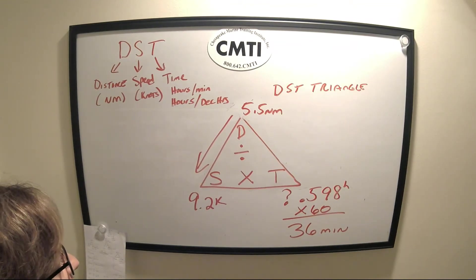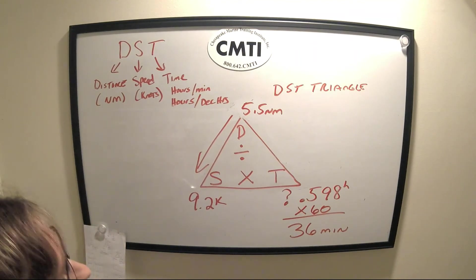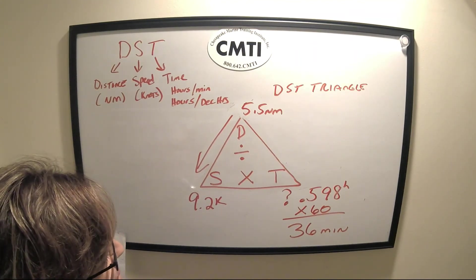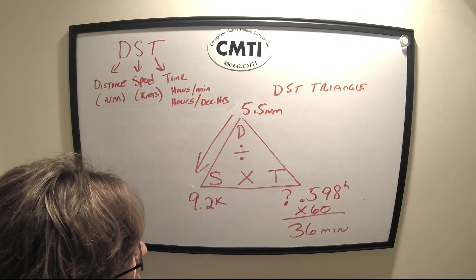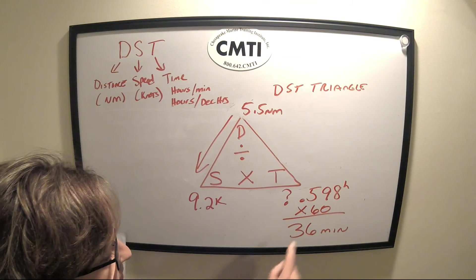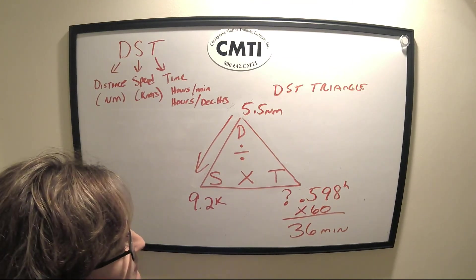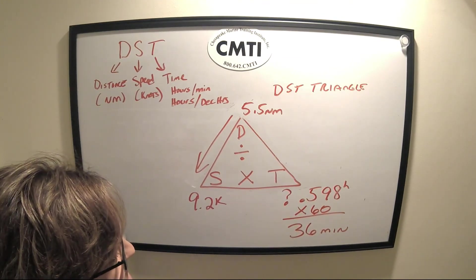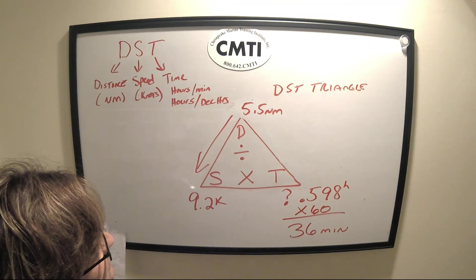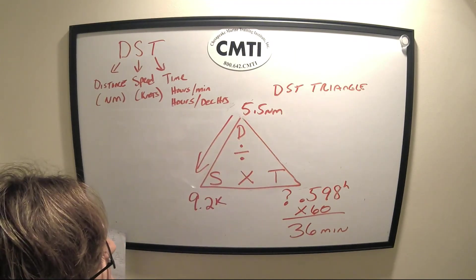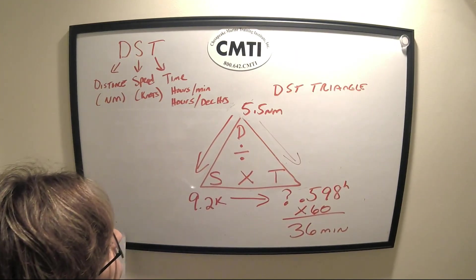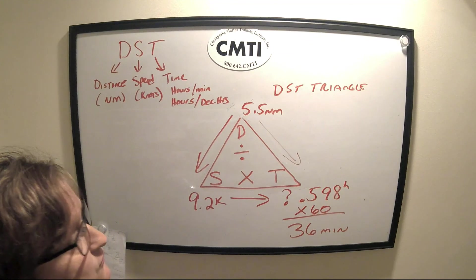I hope this gives you a good overview of how to use the DST triangle. It takes practice, but the key is handling time correctly: if you have minutes, convert to decimal by dividing by 60; if you get a decimal result, convert back to minutes by multiplying by 60; hours just carry down unchanged. Always remember the order of operation — top down or left to right. Thank you for watching.